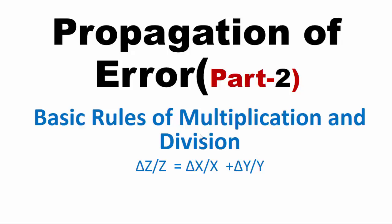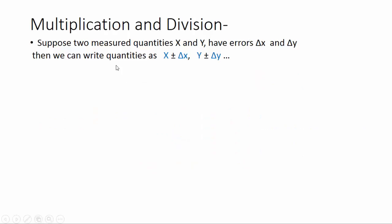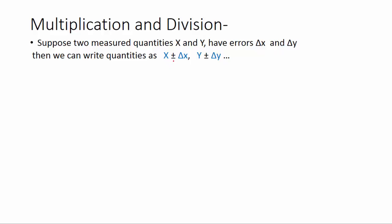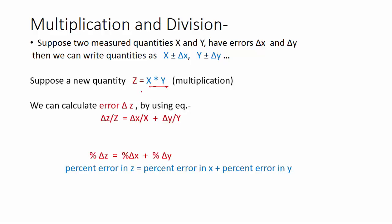This is also part of propagation of error. Suppose we have two measured quantities x and y, and these quantities have errors delta x and delta y. We can write these quantities as x plus-minus delta x and y plus-minus delta y. Now suppose a new quantity z is the multiplication of these two quantities x and y, and we have to find the error in z. For that we use the formula: delta z over z equals delta x over x plus delta y over y.